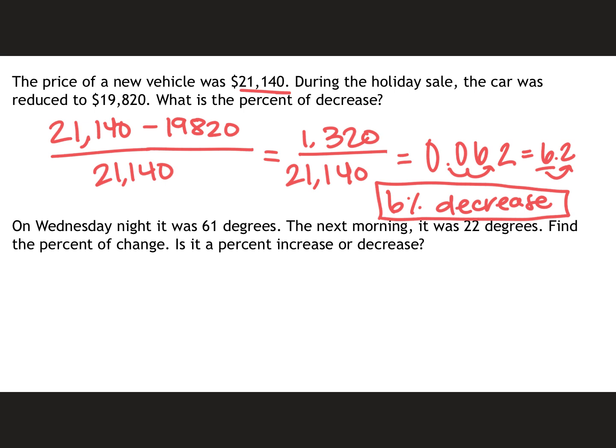On Wednesday night it was 61 degrees. The next morning it was 22 degrees. Find the percent of change. And is it an increase or decrease? So again on the top of our fraction we are going to find the difference between the two. I just always start with the largest number so that it is a whole number. And then divide it by the original. So in this case the night, Wednesday night, happened before the next morning. So that would be the original that we put on the bottom.